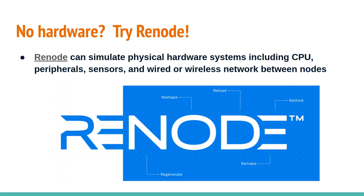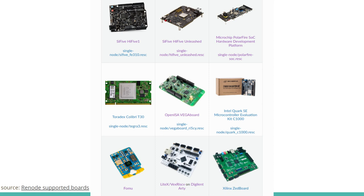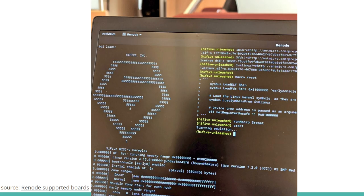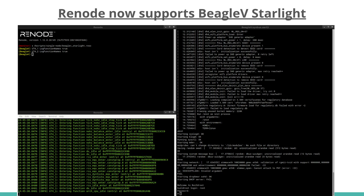If you don't have any hardware at all, I highly recommend Renode. Similar to QEMU but more tailored towards specific boards, Renode can simulate physical hardware systems including the CPU, peripheral sensors, and even wired and wireless networks between nodes. On the Renode website, you can see profiles for different boards including the SiFive Unleashed. Renode now has support for the BeagleV Starlight, so even before the board comes out as a product, you can emulate it on your laptop or workstation.